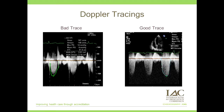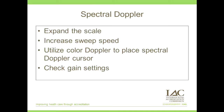Here is a Doppler tracing where the image on the left shows a trace done in a lab — clearly not following the true signal — while the one on the right is much better. These inaccurate traces can make a huge difference with your mean gradient. To summarize your spectral Doppler: expand the scale, decrease it to incorporate the signal throughout, increase the sweep speed when needed, utilize your color Doppler to help place the spectral Doppler cursor, and check your gain settings throughout your Doppler study.